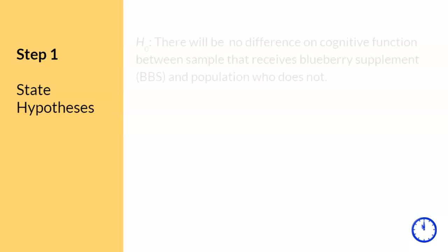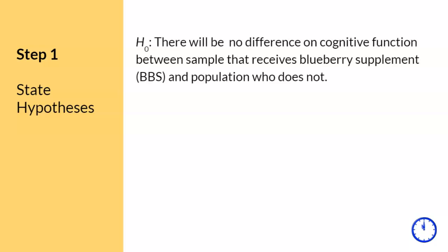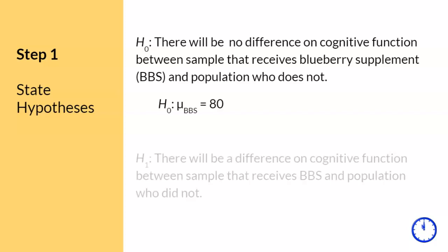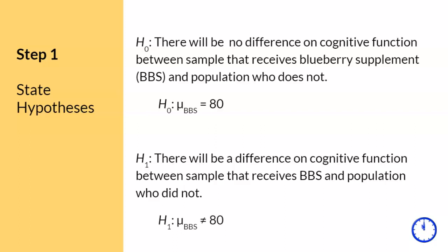Step 1. Since we are studying the effect on cognitive function, the hypotheses will include that variable. Since the treatment in the study was the blueberry supplement, I shortened it to BBS. In notation, if the sample is not different from the population, then the sample should have the same mean as the population, which is mu equals 80. The research hypothesis will reflect that there is a difference, and in notation, if the sample is different from the population, then the sample should not equal the same mean as the population.